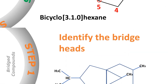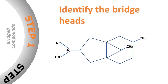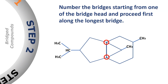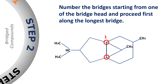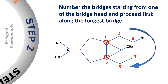Let us consider another molecule. The first step, as we have seen in the last example, is the identification of the bridge heads. After the identification of the bridge heads, we will number this bicyclic system starting from one of the bridge heads. We move along the longest bridge — in this case, the right bridge is the longest bridge — so we will move in a clockwise direction, naming the right bridge first.